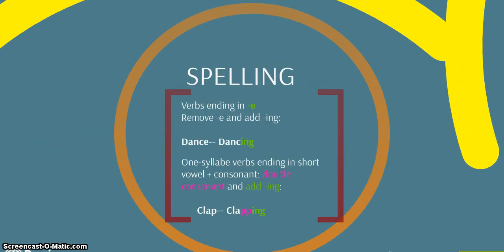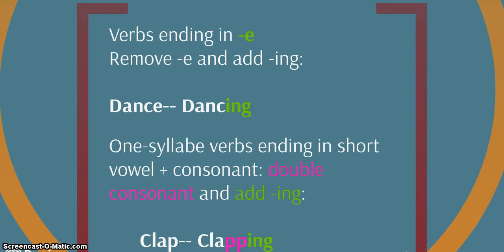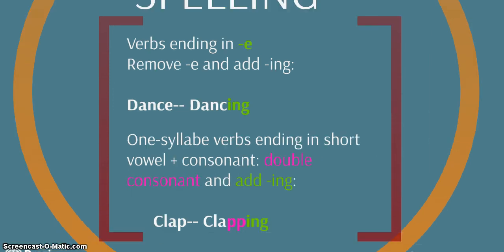But you know English is not simple. Spelling. Remember, for the main verb we add ing. But be careful. The verbs ending in e, we remove the e and we add ing. For example, dance. Dancing. You see, there is no e and we add ing. With verbs with one syllable, which end in a short vowel plus a consonant, what do we do? We double the consonant and then we add ing. For example, clap. We have a short vowel and a consonant. So, we double the consonant and then we add ing.